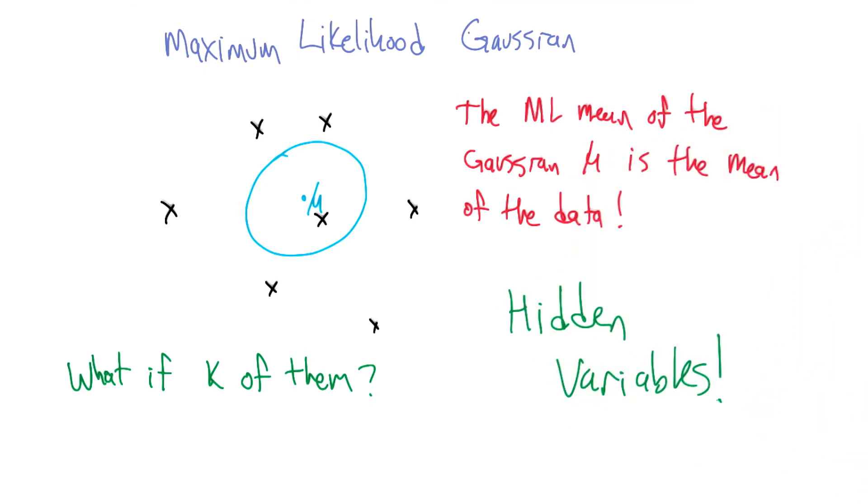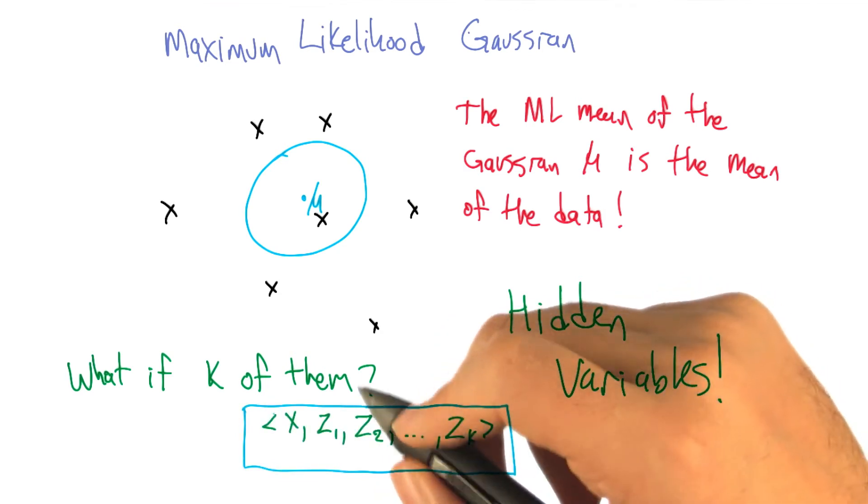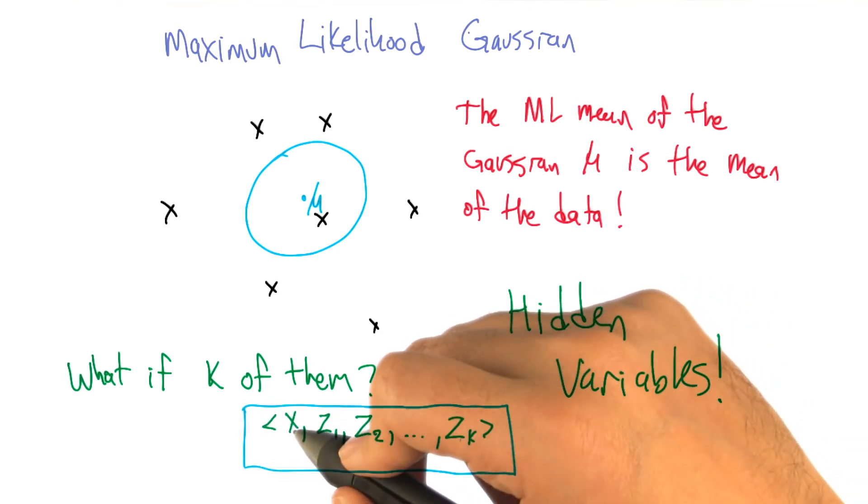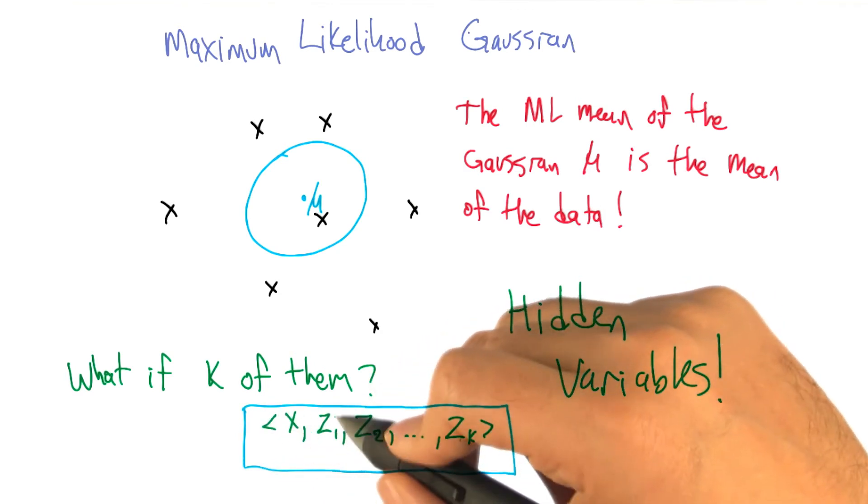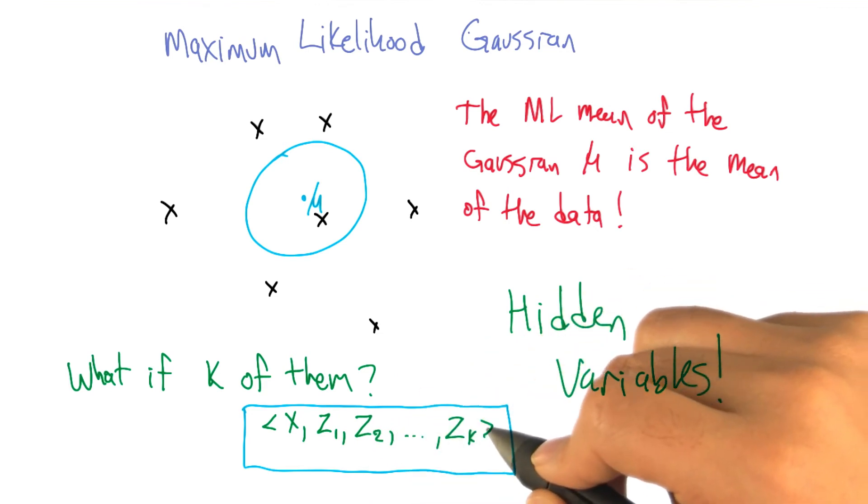Ah, my favorite kind of variables—variables that you don't have to see. So what we're going to imagine is the data points, instead of just being X, that's actually X and then a bunch of random variables that are indicator variables on which cluster that X came from.